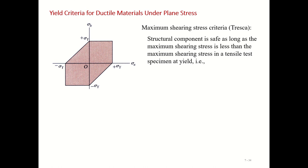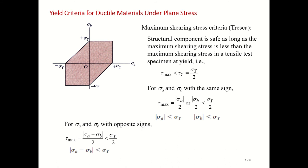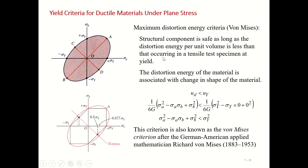Previously we discussed the yield criteria for ductile material under the plane stress condition — that was the Tresca criteria. There is another criteria by which we can assess whether the material will fail or not: it is the Von Mises criteria, associated with the German-American applied mathematician Richard Von Mises.